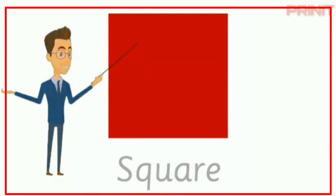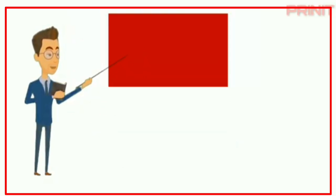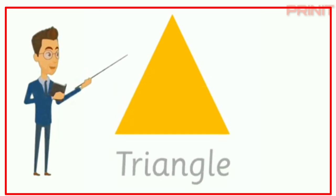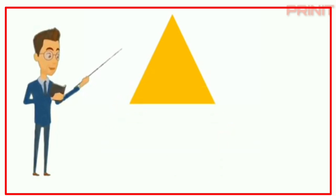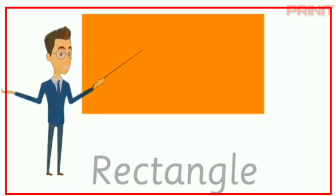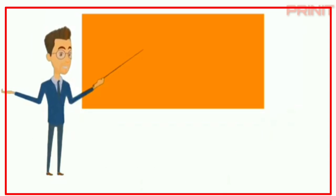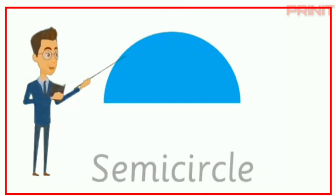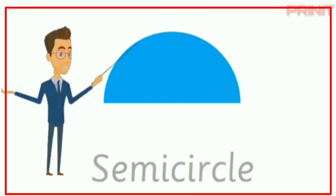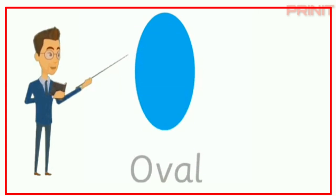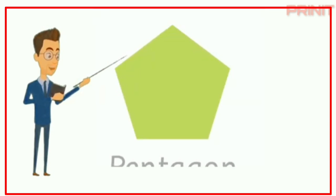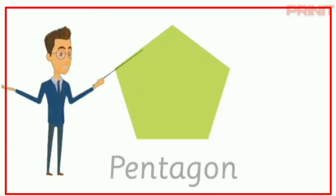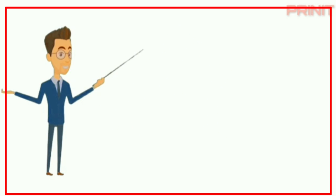Shapes learning. Square. Triangle. Rectangle. Semi-circle. Oval. Pentagon. Star.